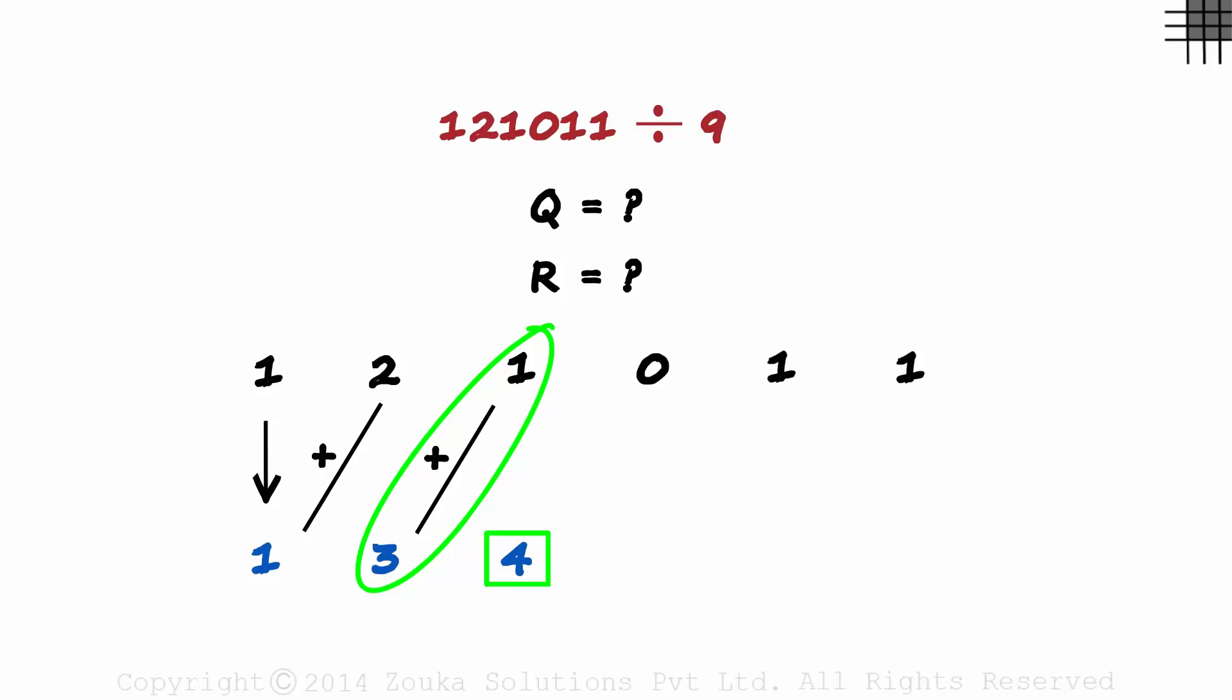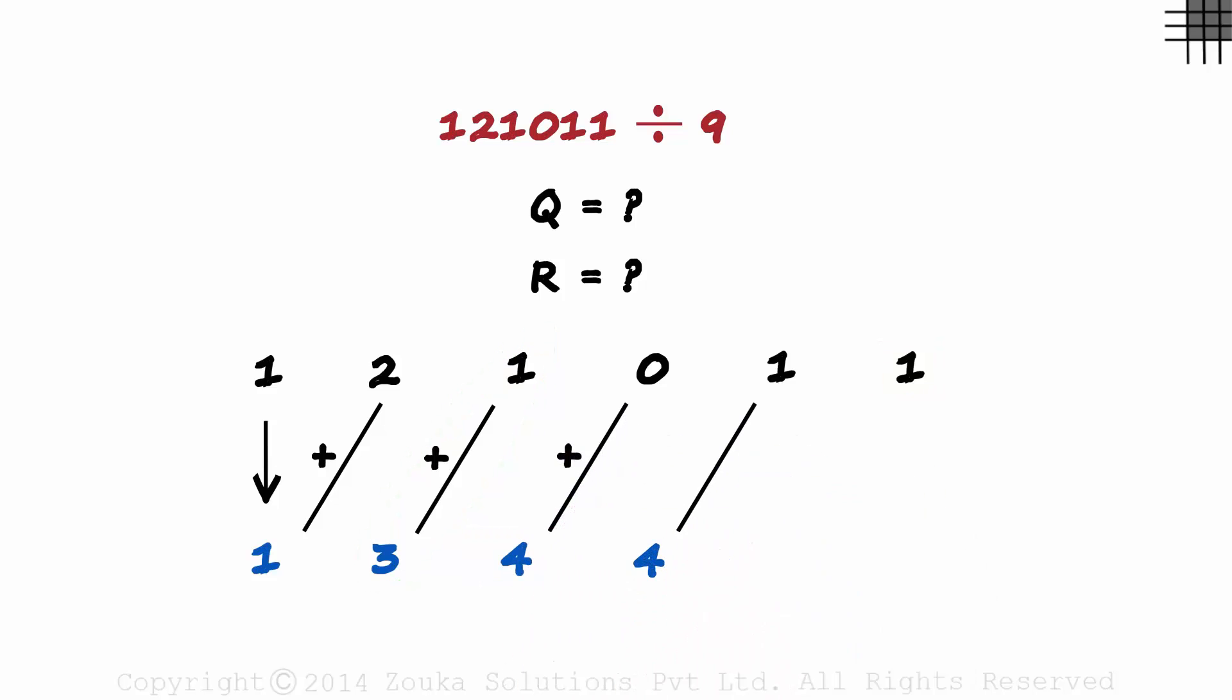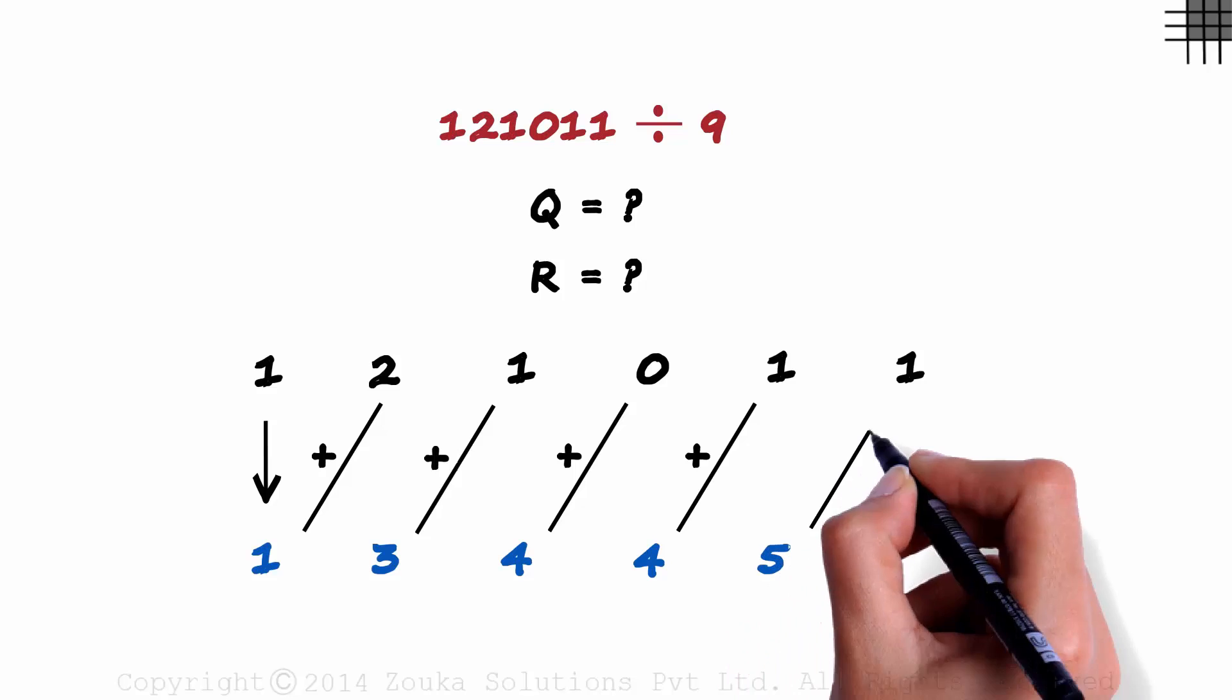We continue this until we reach the last digit. 4 plus 0 is 4, 4 plus 1 is 5, and 5 plus 1 is 6.